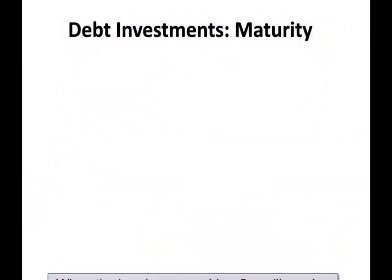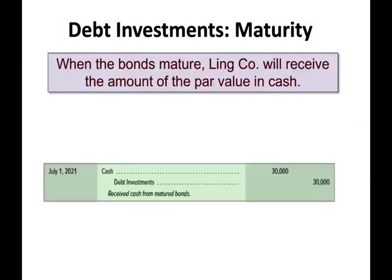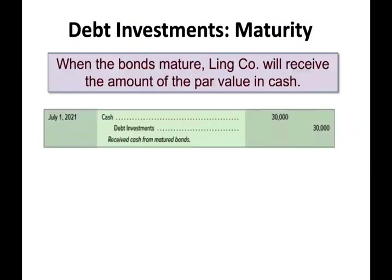Once the bond matures, we get our money back — we get the par value, which is $30,000. So we credit debt investments and debit cash for the bond value. That is the first category.